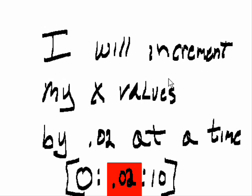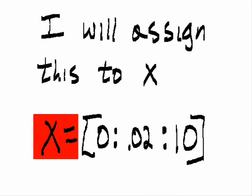I will increment my x-values by 0.02 at a time. And there's my 0.02 parameter in this command. I will assign this to x. x equals 0, 0.02, 10.